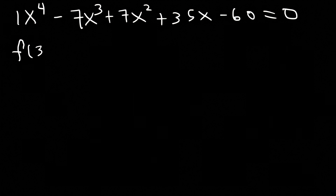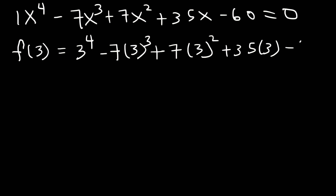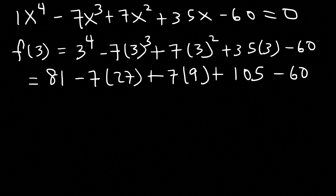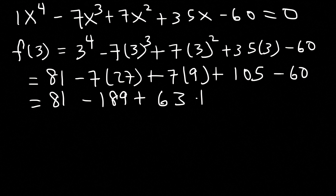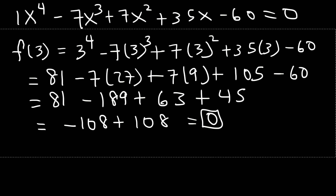Let's try x equals 3. So 3 to the fourth power minus 7 times 3 to the third plus 7 times 3 squared plus 35 times 3 minus 60. 3 to the fourth is 81, 3 to the third is 27, and 3 squared is 9. 35 times 3 is 105; 7 times 27 is 189; 7 times 9 is 63; and 105 minus 60 is 45. So 81 minus 189 is negative 108, and 63 plus 45 is positive 108. This adds up to 0, which means x is equal to 3 — that's one of the answers.